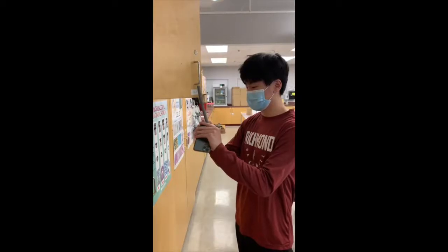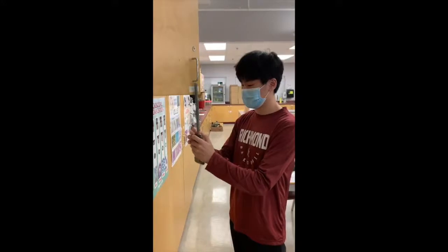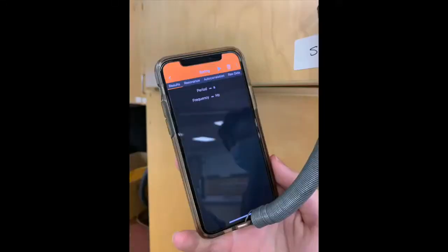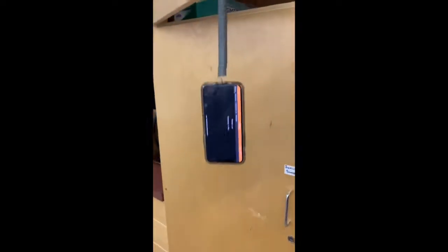To solve for T, we first hang the spring with the phone attached to it. We then open PhyPhox on the phone and hit the spring option. This will give us the period when the phone is in motion. Pull the spring down, let go, and record the value that PhyPhox gives you. This is the period.